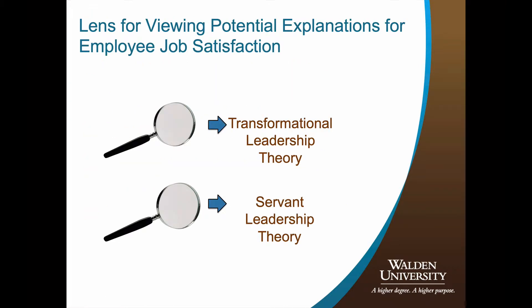Let's assume the problem or phenomena is that of job satisfaction. It stands to reason there are a plethora of explanations that can be offered for employee job satisfaction. As the researcher, you have the choice of lens through which to view the problem. For example, you might hypothesize or rationalize, based on the literature, that transformational leadership characteristics offer a systematic view for job satisfaction. Specifically, you hypothesize that a leader's transformational leadership characteristics influence or are related to job satisfaction.